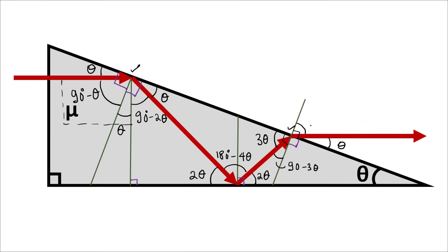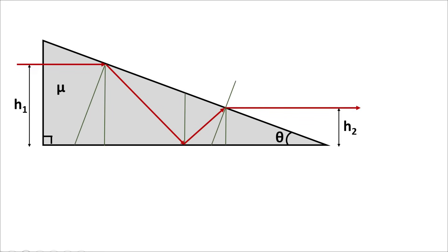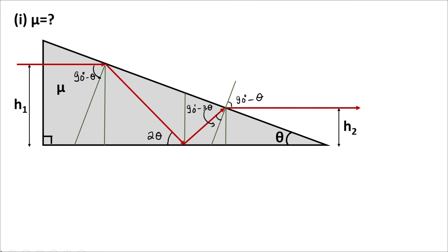This angle is 180 degrees minus 4 theta. In this triangle, this is theta and this is 180 minus 4 theta, so this angle should be 3 theta. This angle is 90 degrees, and this is 3 theta, so this is 90 minus 3 theta. This angle is also 90 degrees, so this is theta, giving 90 minus theta. Now keeping only the useful information: the angle of incidence here was 90 degrees minus 3 theta and the angle of refraction here was 90 degrees minus theta.